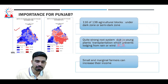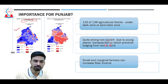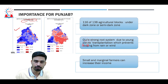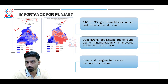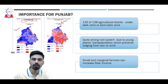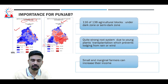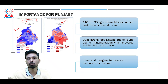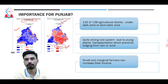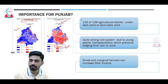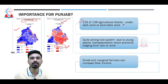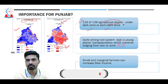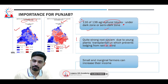A map from 1965 shows large parts of Punjab colored blue, indicating water levels at a depth of just two to five meters. By November 2015, much of that blue area had converted to red, meaning water once found at two to five meters depth is now found at 10 to 20 meters. As of November 2020, 116 out of 138 agricultural blocks of Punjab are under dark zone or semi-dark zone, indicating continuously increasing water stress.